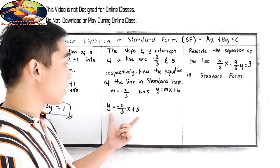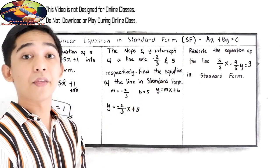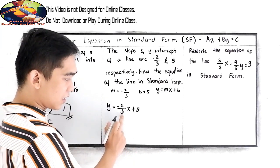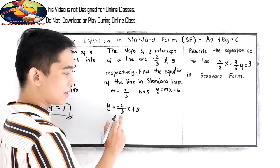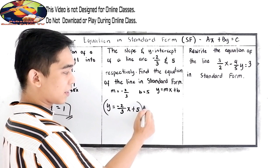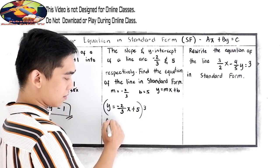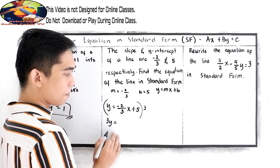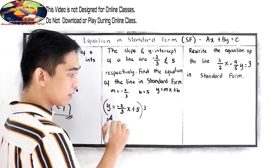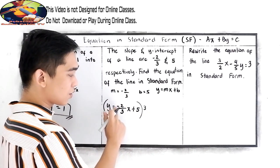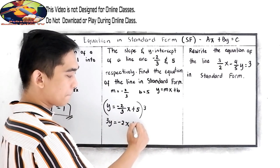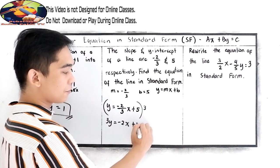Now from the slope-intercept form, write it into standard form. Let us remove the denominator 3 by multiplying the equation by 3. So 3 times y is 3y equals 3 times -2/3 x, the 3s cancel leaving -2x, plus 5 times 3, which is 15.